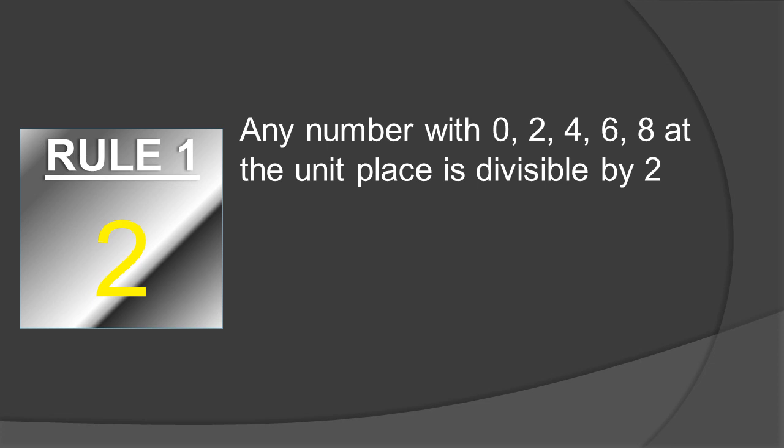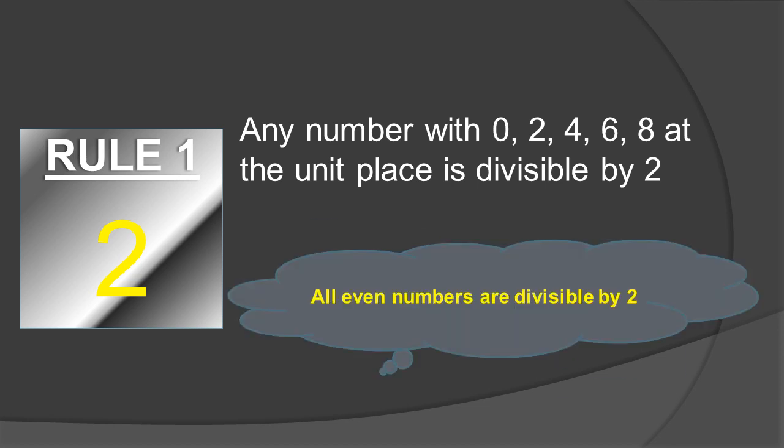Let's start with the very first rule — rule number 1. It helps us to find out whether any number is divisible by 2. According to this rule, any number with 0, 2, 4, 6, or 8 at the unit place is divisible by 2. These numbers are the even numbers, so it means all even numbers are divisible by 2. Any big number with an even number at the unit place is divisible by 2.